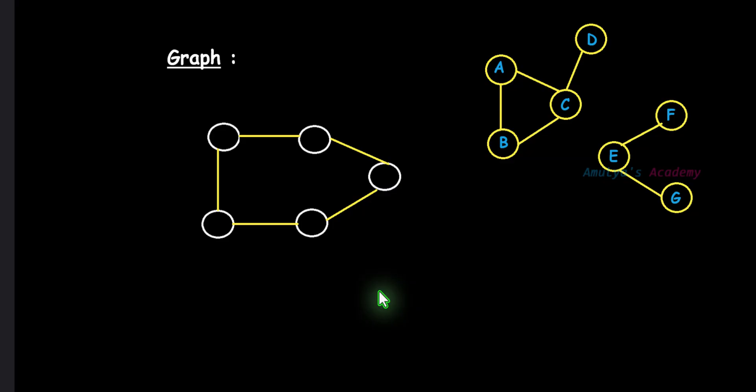If we traverse a graph using the BFS algorithm and all the nodes of the graph are visited, then that graph is a connected graph. When we apply the BFS algorithm on a graph, if any node is not visited, then that is a disconnected graph.